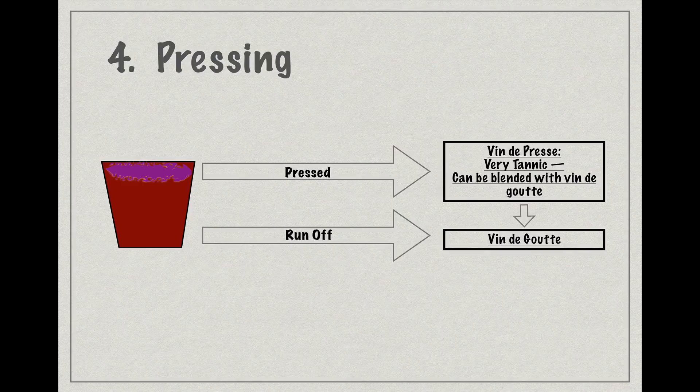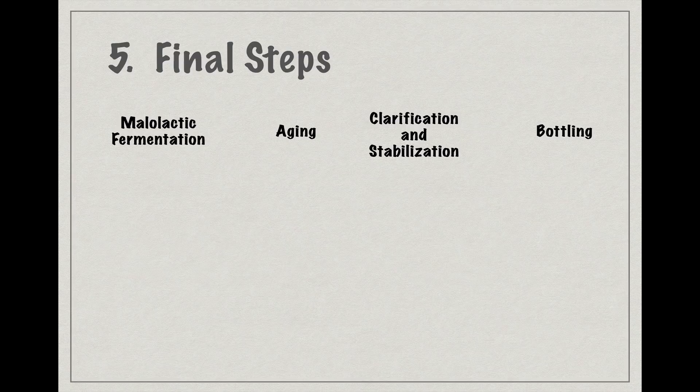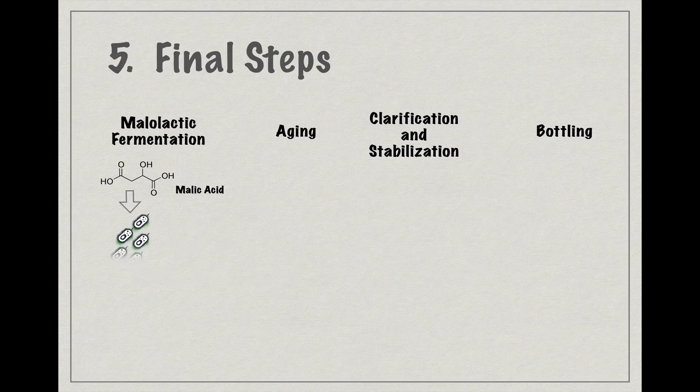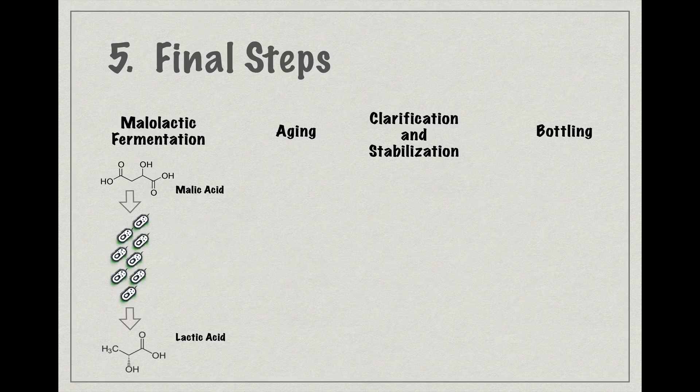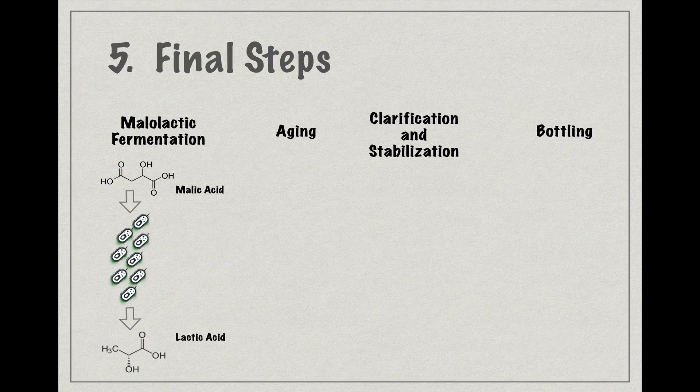Though the juice is now wine and could be bottled as such, there are usually a few more steps that the wine will go through before ending up under glass. Almost all red wines will go through a process called malolactic fermentation, or, more accurately, since it isn't a true fermentation, malolactic conversion, in which the very tart malic acid in the wine will be converted by various lactic acid bacteria into the smoother, richer, and rounder in the mouth lactic acid.